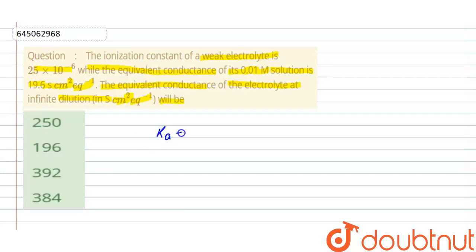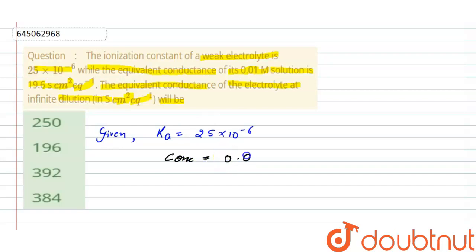So here Ka = 25×10⁻⁶, and the given concentration is 0.01 molar, or we can say 10⁻² molar.